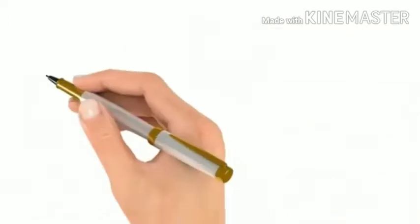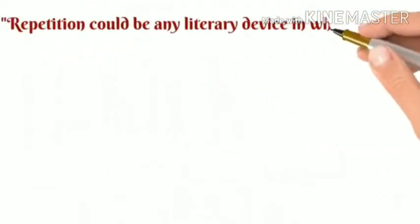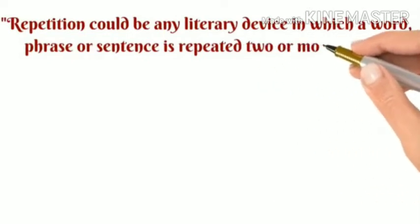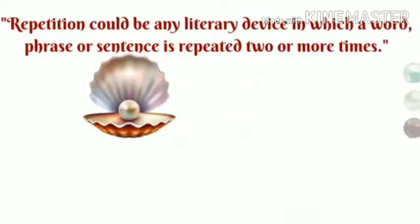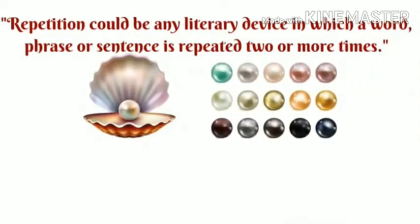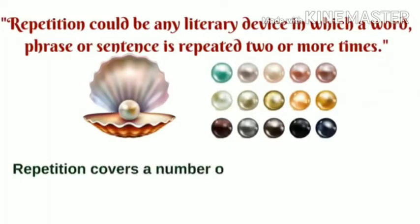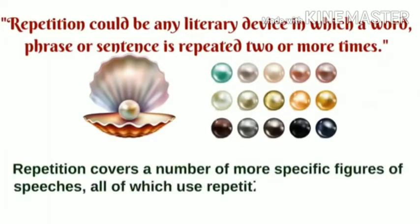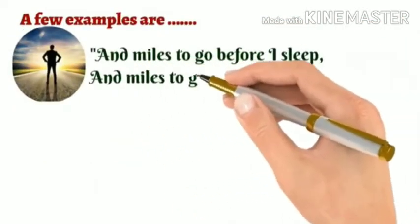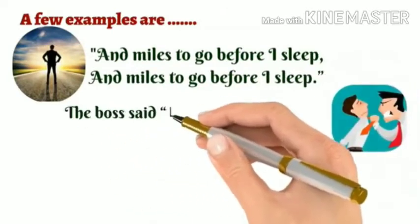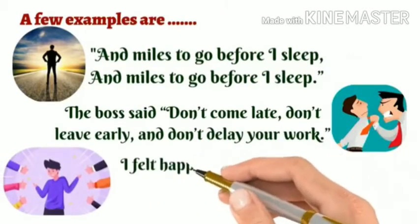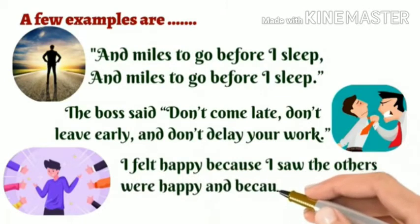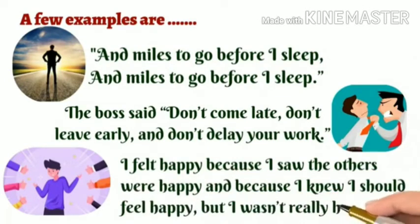Repetition could be any literary device in which a word, phrase, or a sentence is repeated two or more times. It's not usually thought of as a single figure of speech; instead, it's more useful to think of repetition as a category covering a number of more specific figures of speech. Examples: 'And miles to go before I sleep, and miles to go before I sleep.' 'Don't come late, don't leave early, and don't delay your work.' 'I feel happy because I saw the others were happy. Because I knew I should feel happy, but I wasn't really happy.'